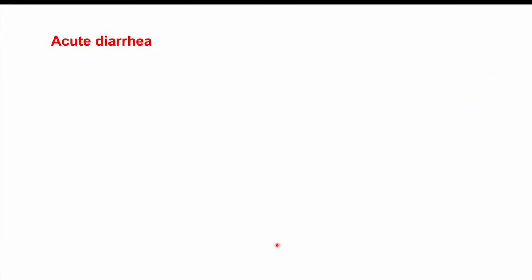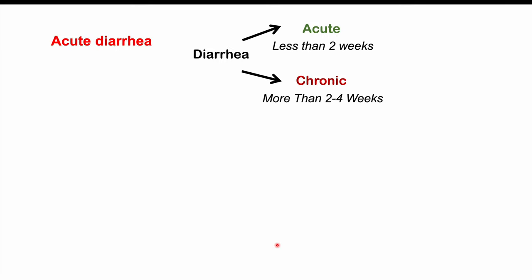Once symptoms begin, patients will have acute diarrhea, meaning it lasts less than two weeks. Acute diarrhea is often going to be infectious, which can help determine that this is due to an infection. Chronic diarrhea would be more than two to four weeks.